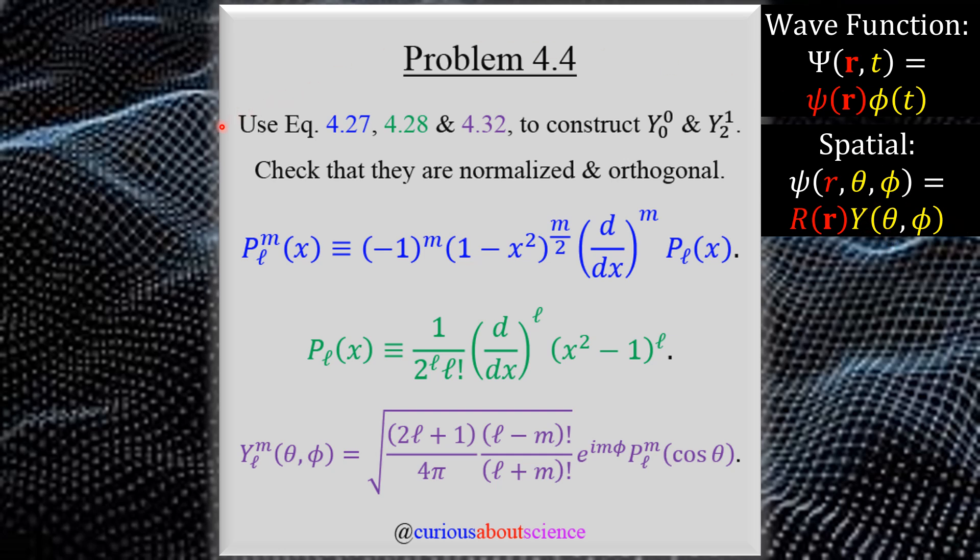What we want to do is use equations 4.27, 4.28, and 4.32 to construct the angular equation for 0,0 and 1,2. These have a special name, which we'll talk about very soon. Check that they are normalized and orthogonal.